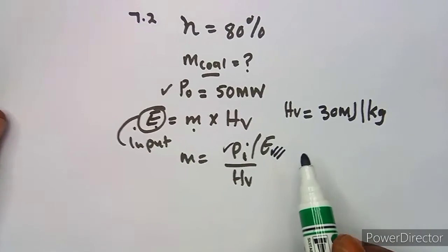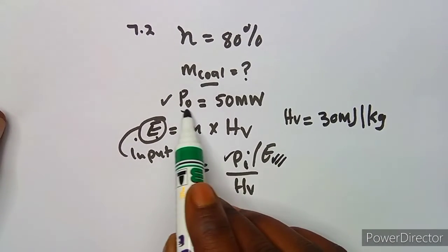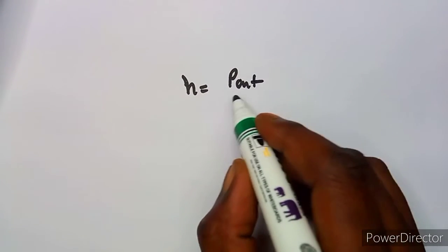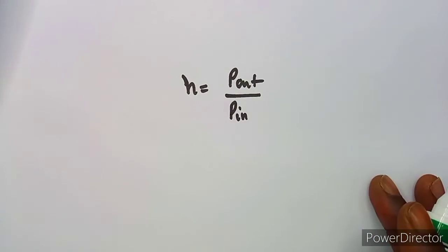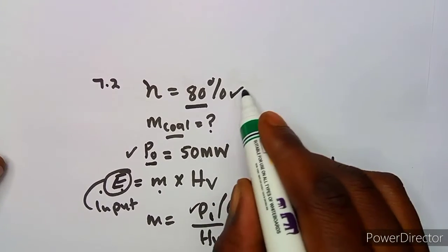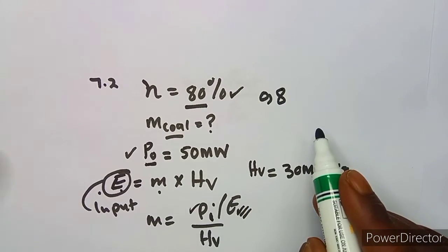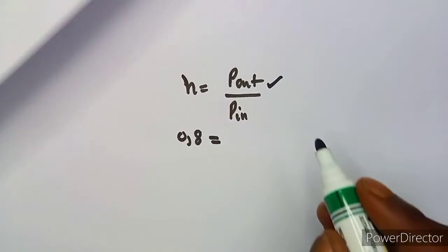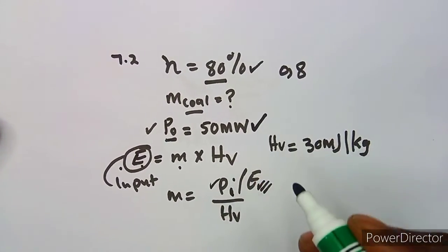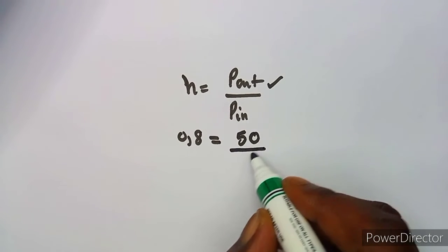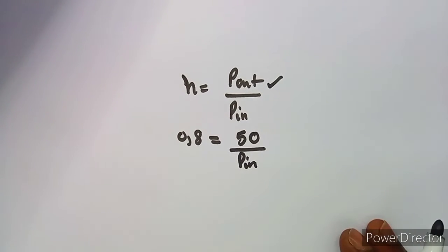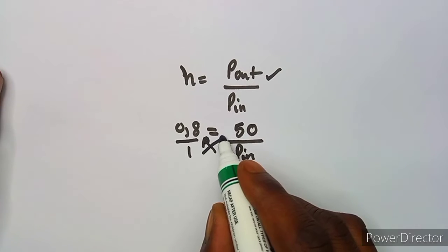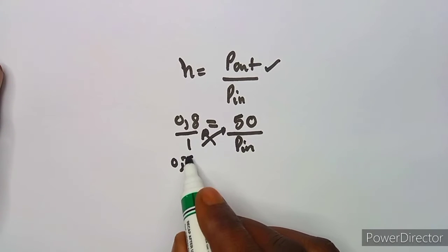Efficiency equals P_out over P_in. As a decimal, 80% becomes 0.8. So 0.8 equals the output power of 50 megawatts divided by the input power P_in. To find P_in, cross-multiply and divide: 0.8 × P_in = 50 megawatts.